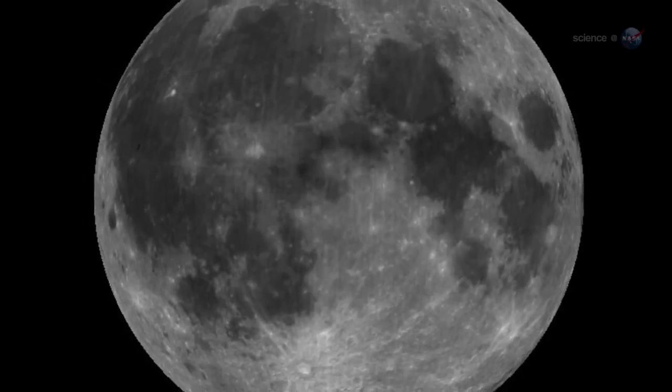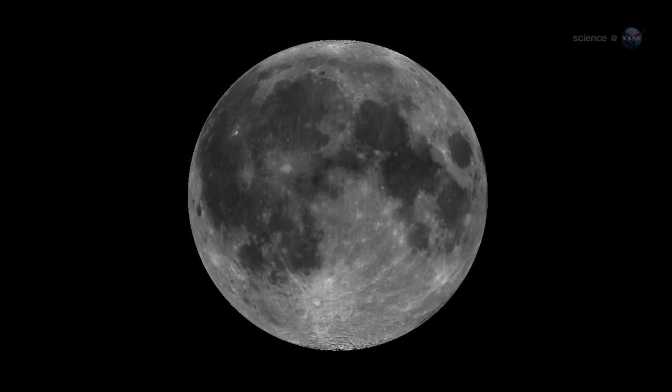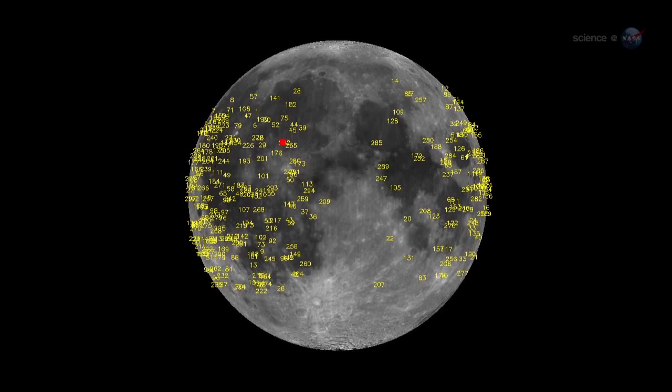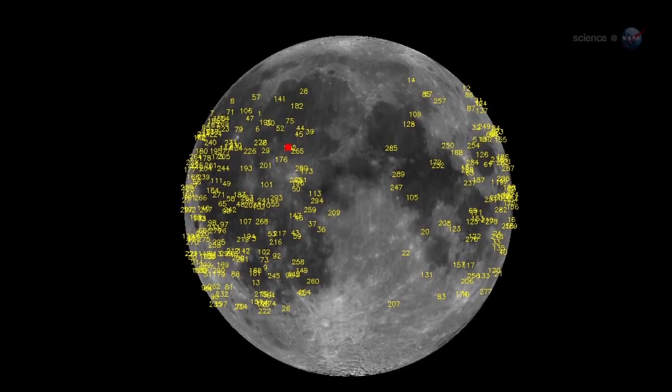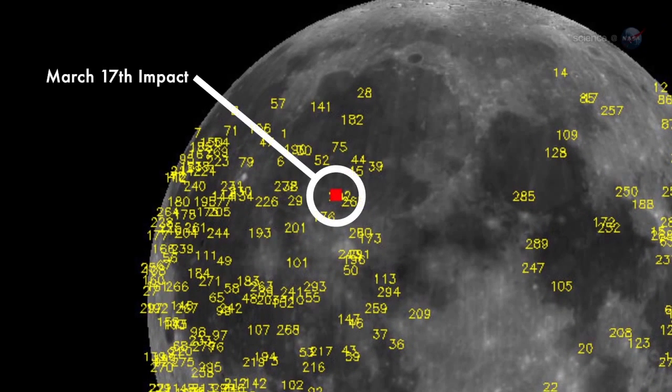Unlike Earth, which has an atmosphere to protect it, the Moon is airless and exposed. Lunar meteors crash into the ground with fair frequency. Since the monitoring program began in 2005, NASA's Lunar Impact Team has detected more than 300 strikes, most orders of magnitude fainter than the March 17th event.